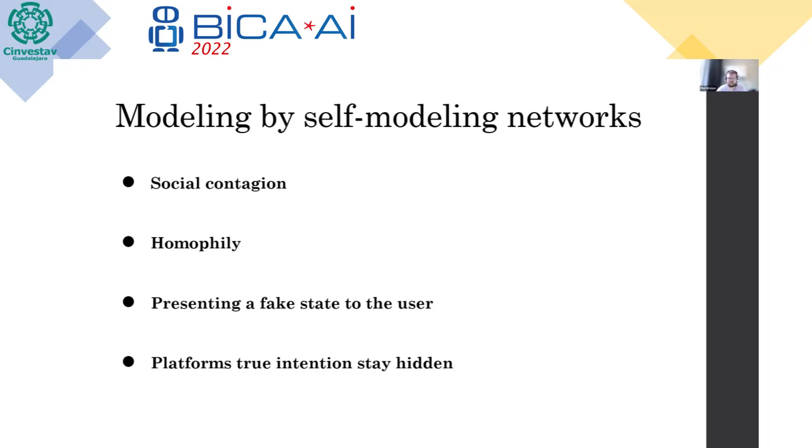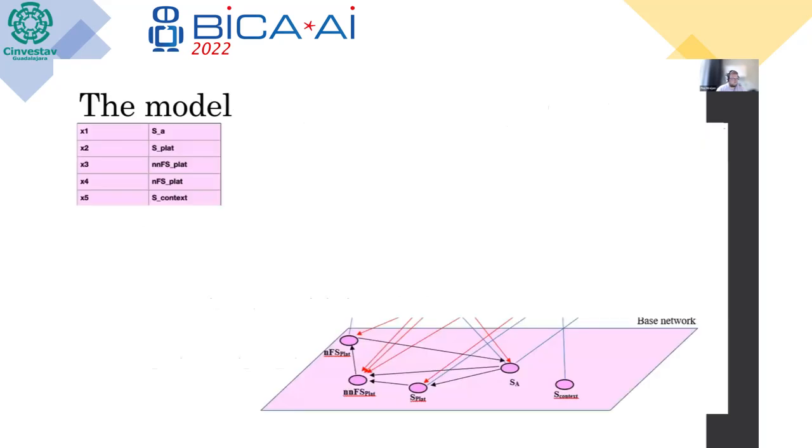So we created a model for this where we have a base layer. Can you see my mouse pointer? Let me make it a laser pointer. Okay, perfect. So the faking by homophily principle led us to our model.